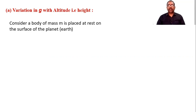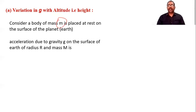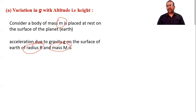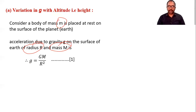We consider one body placed on the surface of Earth, having mass m. The acceleration due to gravity g on the surface of Earth, whose radius is R and mass is M, is given by the formula: g = GM/R². This is equation number one.